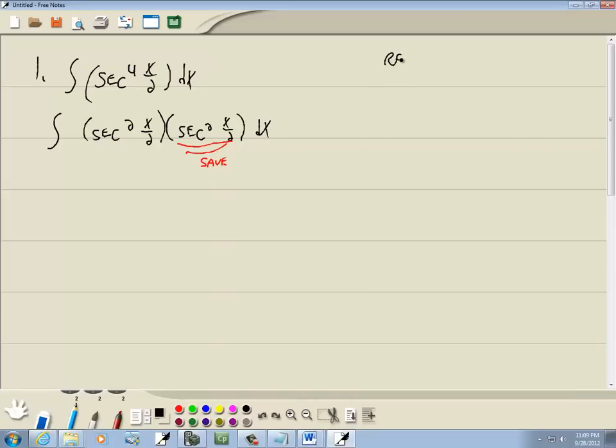And recall we got tangent squared plus 1 is equal to secant squared. So this first part here that's secant squared, we could rewrite that as tangent squared plus 1.